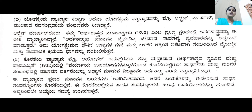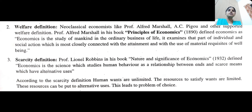This definition is also called the choice definition. The scarcity definition is also called the choice definition of economics. Why is economics called the science of choice? Because wants are unlimited, resources are limited, and these resources can be put to alternative uses. So this leads to the problem of choice. This definition is also called scarcity definition or choice definition, and according to Lionel Robbins, economics is a science of choice.